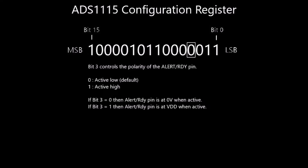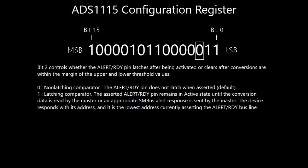Bit 3 sets the polarity of the alert ready pin. This tells the ADC whether the pin will be pulled low or pulled high when active. If its natural state is high, then when active it will be pulled low, and vice versa. Bit 2 determines if the alert ready pin is cleared when the data value is within the margin of the high and low threshold, or if it remains active until the conversion data is read by the microcontroller, or until the microcontroller sends an SMBus acknowledgement to the ADC and reads the ADC I2C address. More detail on this will come when we begin programming the ADC.